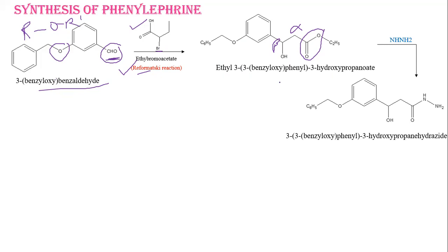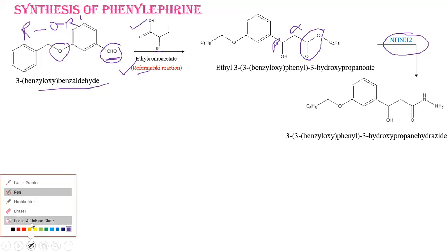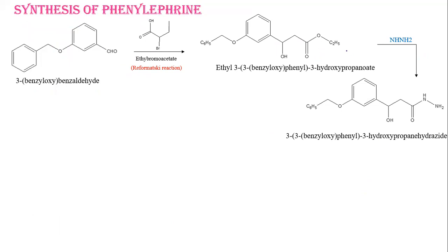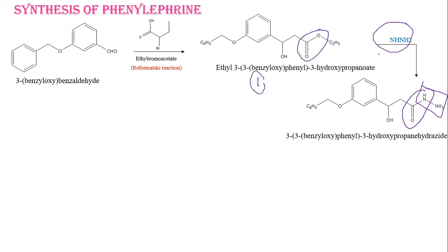When this same product undergoes reaction with hydrazine hydrate, that will lead to the formation of a hydrazide. The ester group undergoes reaction with hydrazine, so that ester is converted into an amide moiety with the NH-NH2 group coming from hydrazine. So the reaction of structure one with hydrazine gives us a hydrazide.